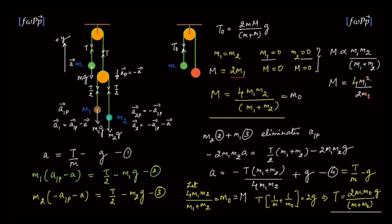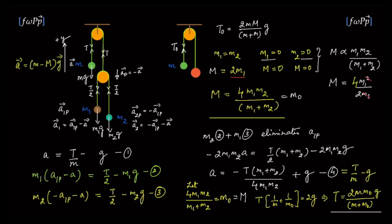The last part is to write the acceleration equation. It can be obtained from equation 1, where the tension is already known. Or, recalling the acceleration formula for a simple two-mass classical pulley system, the acceleration a equals (M − m_eff) divided by (M + m_eff) times g — its own mass minus the effective mass, along the direction of g, divided by the sum of the masses. That is the acceleration and the final part of the problem.